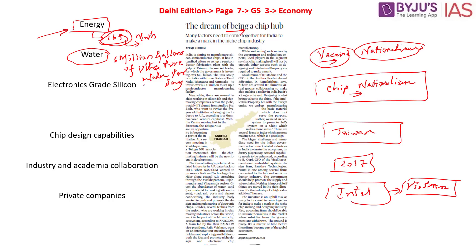The third major challenge is electronics-grade silicon. The manufacturing process requires purified single-crystal silicon wafers, which are also needed for energy security and solar modules. India has huge reserves of silica materials, but the question is whether we have the technology to produce sufficient quantities of purified single-crystal silicon wafers for constant supply to manufacturing entities.